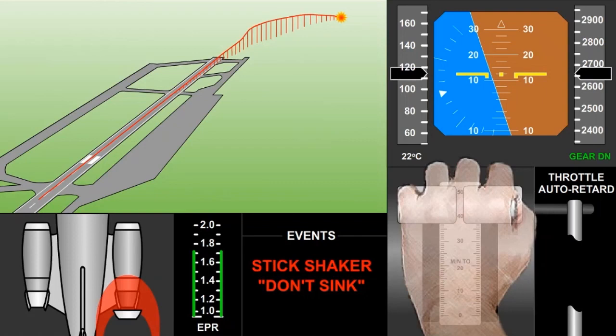An electrical failure prevented the reverser deployment from being indicated to the pilots, resulting in them being unaware of the reverser configuration.